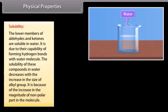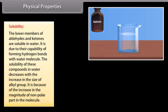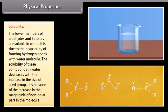Solubility: the lower members of aldehydes and ketones are soluble in water, due to their capability of forming hydrogen bonds with water molecules. The solubility of these compounds in water decreases with the increase in the size of the alkyl group, because of the increase in the magnitude of the non-polar part of the molecule.